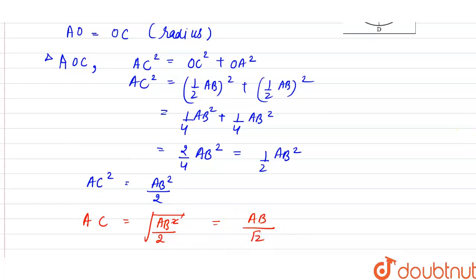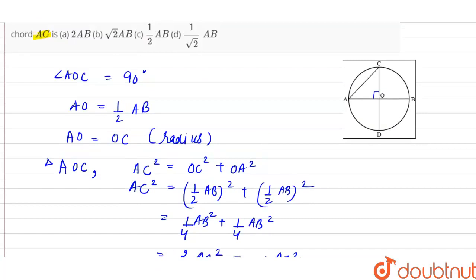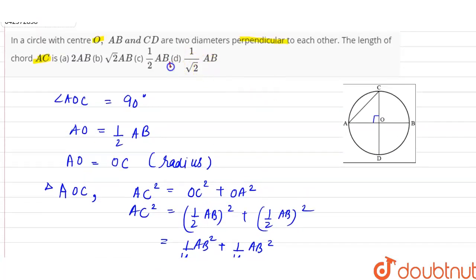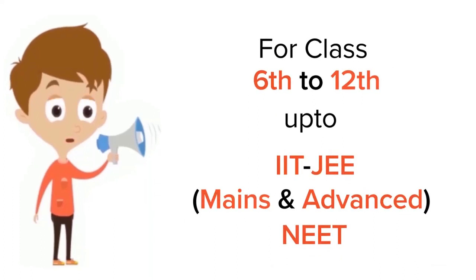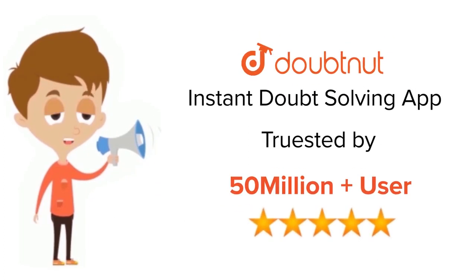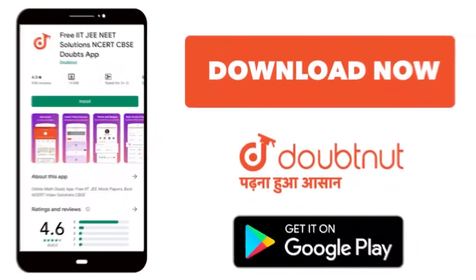So from options we can say that the correct option will be option D. For class 6 to 12, IIT-JEE and NEET level, trusted by more than 5 crore students. Download Doubtnet app today.